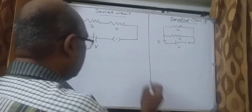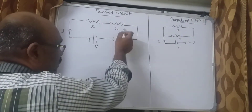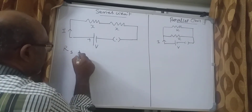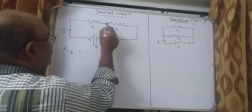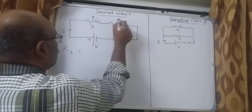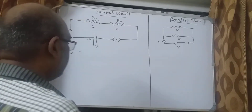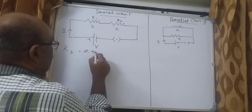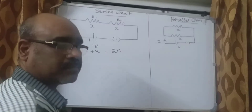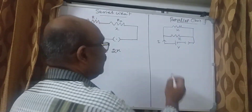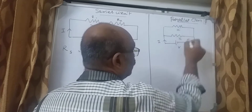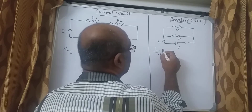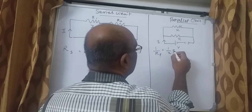The effective resistance for the series circuit is given by Rs = R1 + R2. With R1 and R2 both equal to X, the total series resistance is X + X = 2X. For the parallel circuit, the effective resistance is given by 1/Rp = 1/X + 1/X.